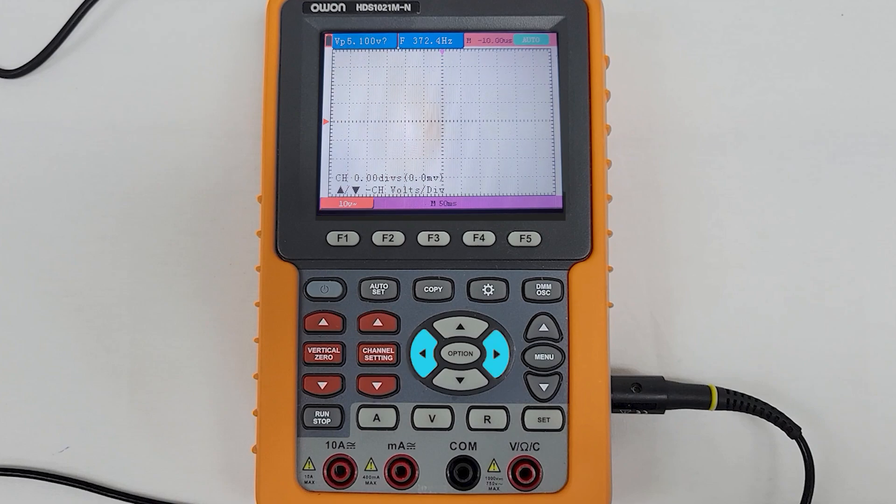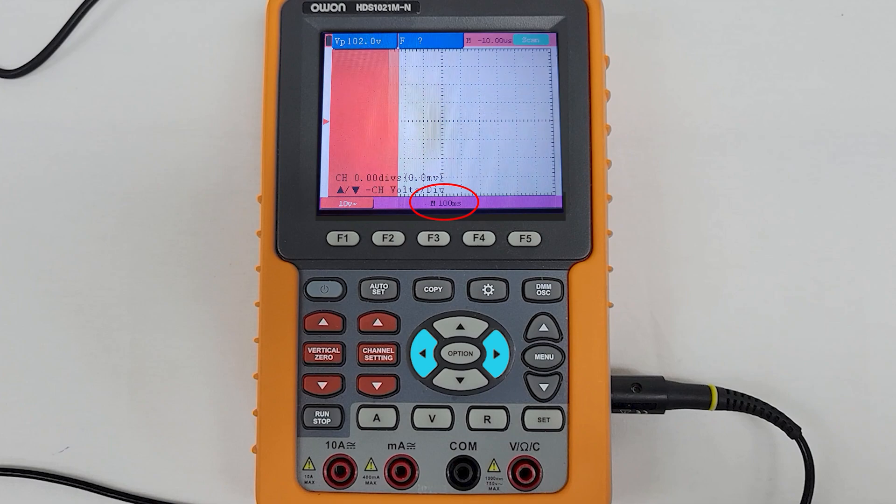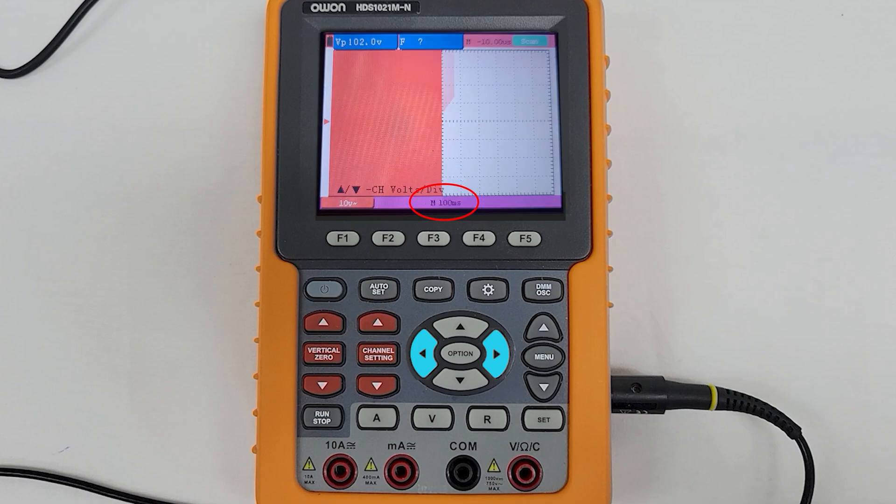Next, you will need to press the left and right arrows of the option button until M20 microseconds shows up in the bottom purple box.